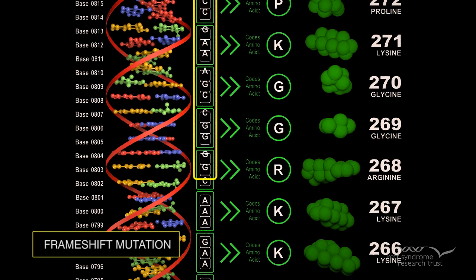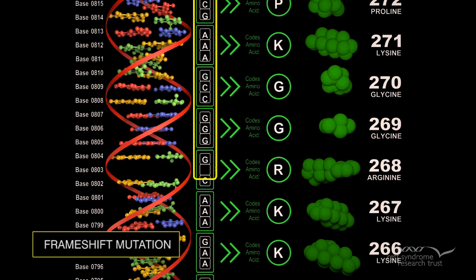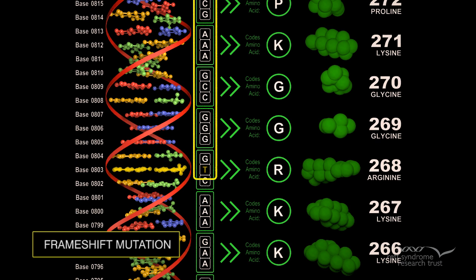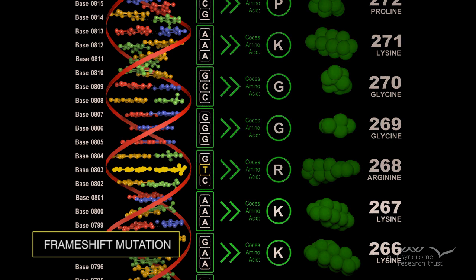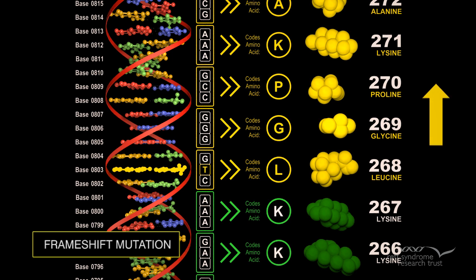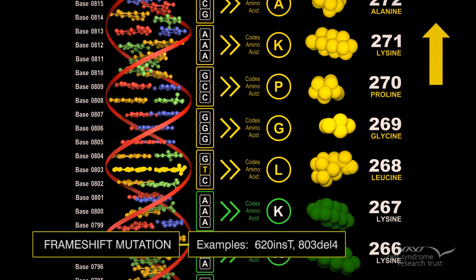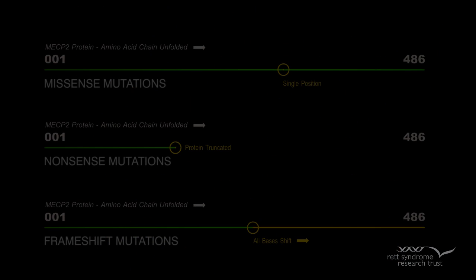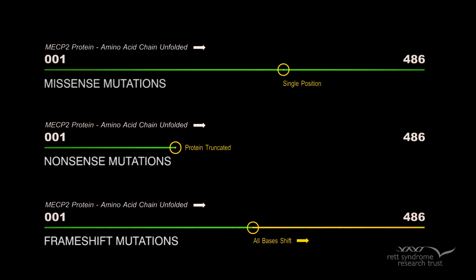Frameshift mutation: this type of mutation occurs when the addition or loss of DNA bases changes a gene's reading frame. A reading frame consists of groups of three bases that each encode for one amino acid. A frameshift mutation shifts the grouping of these bases and changes the code for amino acids. As in the case of nonsense mutations, parts of the protein downstream of a frameshift mutation are rendered non-functional. Insertions, deletions, and duplications can all be frameshift mutations. Of these three types of mutations, only missense mutations accurately pinpoint a site that cannot be altered.